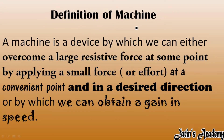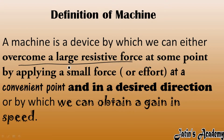The definition of a machine is based on its function. A machine is a device which can either overcome a large resistive force — acting as a force multiplier — at some convenient point, by applying a small force. Convenient point means we are talking about changing to a point that is convenient, and applying that force in a desired direction.